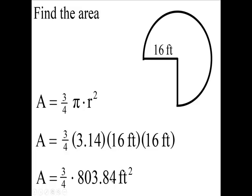Now you take 803.84 times three and then divide it by four, and you're going to come up with 602.88 square feet.